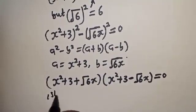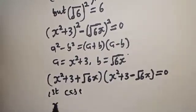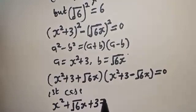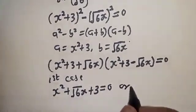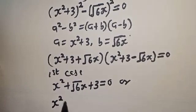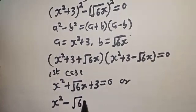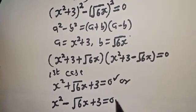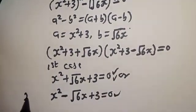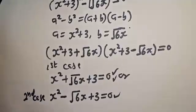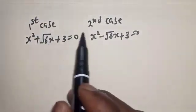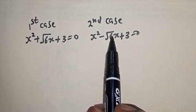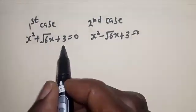There are two cases. The first case: x² + √6·x + 3 = 0. Or the second case: x² − √6·x + 3 = 0. Both are quadratic equations. The first case is x² + √6·x + 3 = 0 and the second case is x² − √6·x + 3 = 0. Let's solve using the quadratic formula.